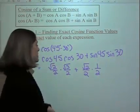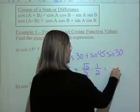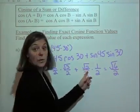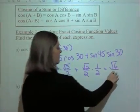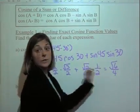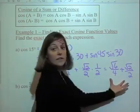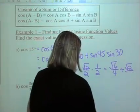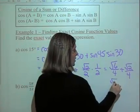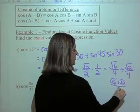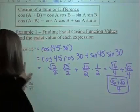Now we can simplify. √2 times √3 is √6, and the denominator is 4 because you have 2 times 2. Then √2 times 1 over 2 times 2 gives us √2/4. Those can consolidate, and the exact answer for cosine of 15 is (√6 + √2) / 4.